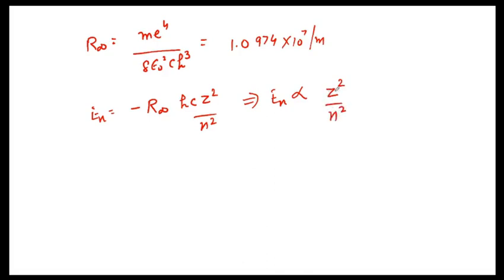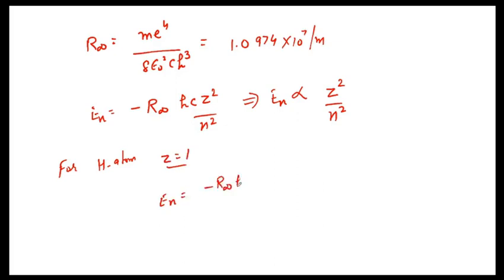The energy is directly proportional to Z²/n², depending on the atomic number and the orbit. For hydrogen, Z equals 1, so E_n = −13.6/n² electron volts. For the first orbit, the energy is −13.6 eV; for the second orbit, it is −13.6/4 = −3.4 eV. The energy increases with increasing orbit number, and for the infinite orbit, the energy is 0 electron volts.